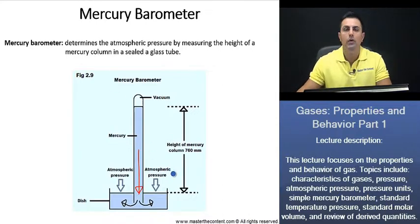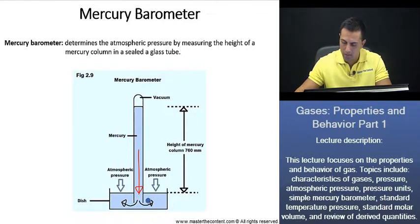If we recall, what is the atmospheric pressure again? That's just going to be the weight of the air. That's going to push down on the mercury in the dish and push the mercury up the column as follows.